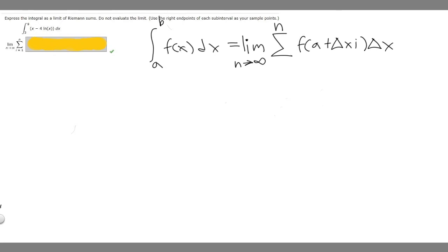So we need to solve for a plus delta x times i, and then delta x. So let's just start off by solving for delta x. So what is delta x equal to? Well, delta x equals b minus a over n.